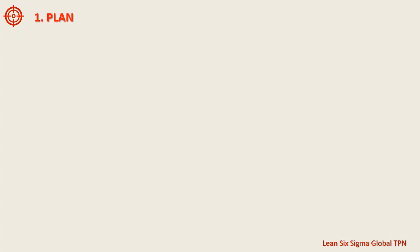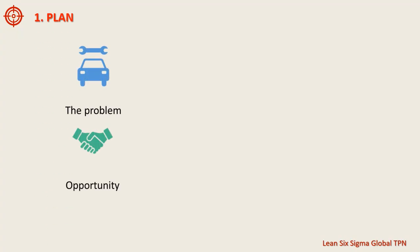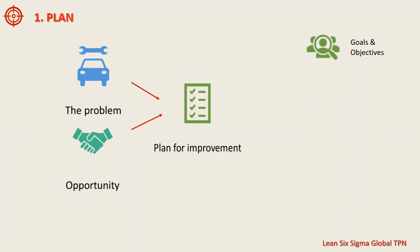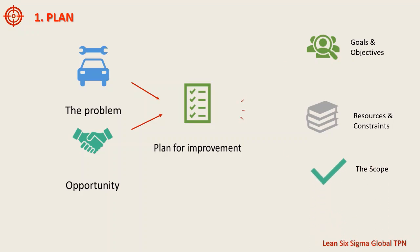The first step of the PDCA cycle is Plan. In this step, you identify a problem or opportunity that you want to address and you develop a plan for improvement. This could include defining goals and objectives, identifying resources and constraints, and determining the scope of the project.